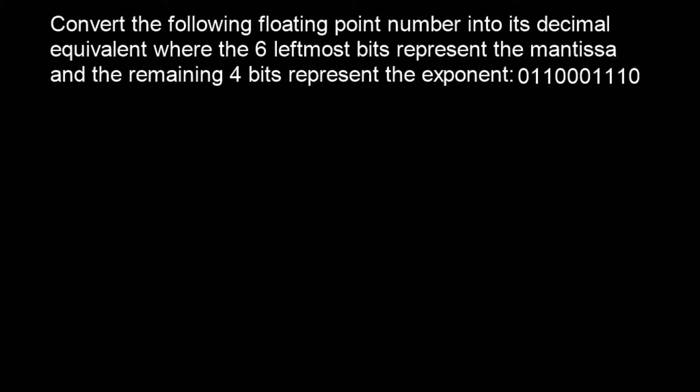The first thing we're going to do is split it into the mantissa and the exponent. So first of all I'm going to write down the mantissa, so that's 0, 1, 1, 0, 0, 0. So that's the first six bits. I'm going to put the implied point in there.